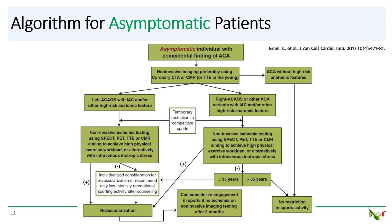Very commonly, coronary artery anomalies will be an incidental finding in an otherwise asymptomatic patient. So what do you do? There isn't a lot of clinical data on how to best manage anomalous coronary arteries, but Christophe Grani's article in JACC Imaging in 2017 does offer some helpful strategies. The algorithm can seem a bit complicated, but the main message is to start with a non-invasive 3D imaging modality. At our center, we typically refer for coronary CTA. If the coronary CTA shows that the anomalous coronary artery takes a low-risk course, then you're done — no further treatment is necessary.